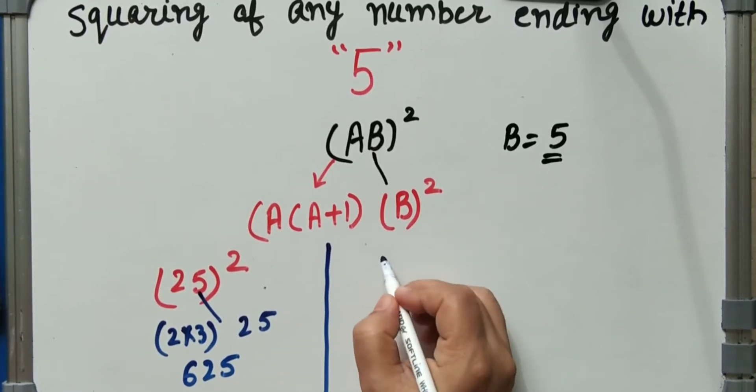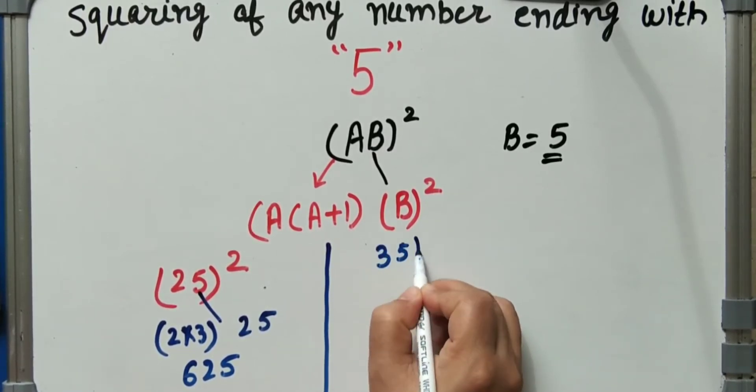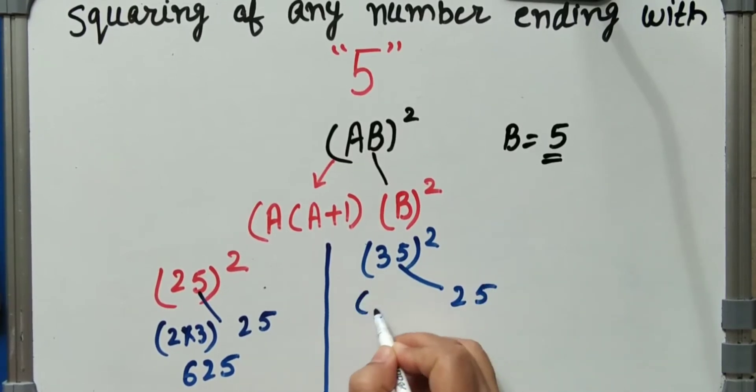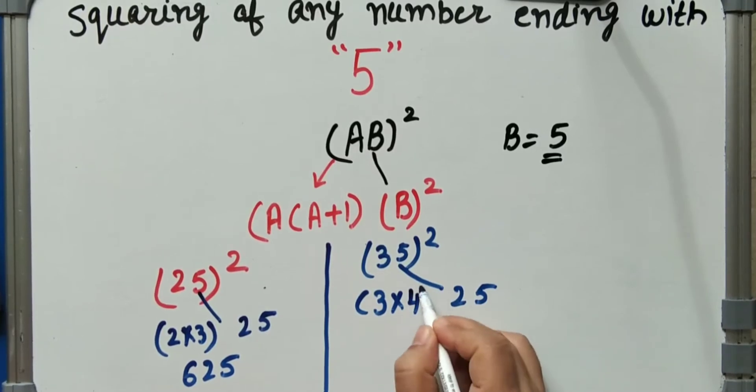Next example we will take 35 square. Here is 25, 3 same as, into 3 plus 1. Next digit is 4. 3 into 4, that is 12, 25. Answer is 1225.